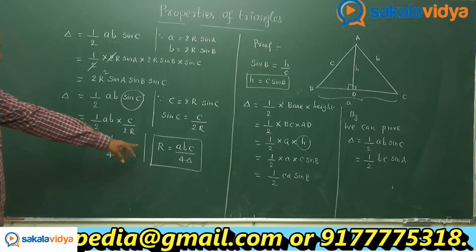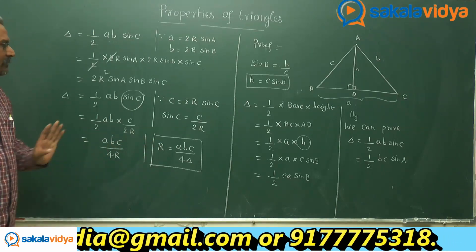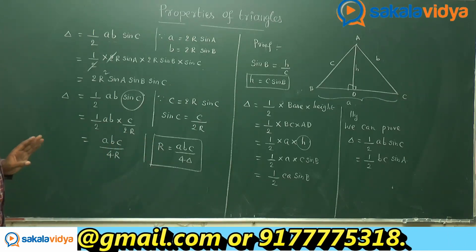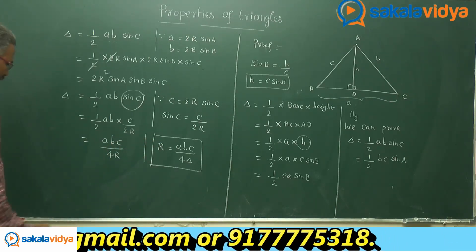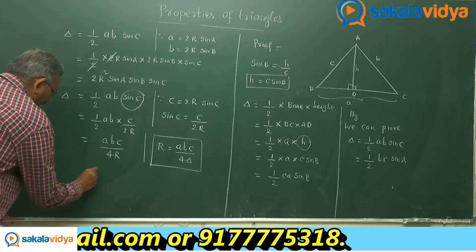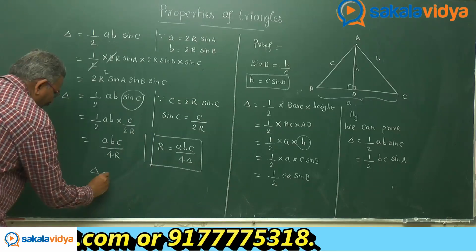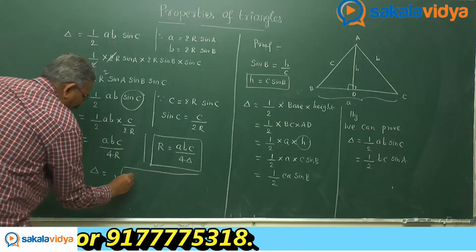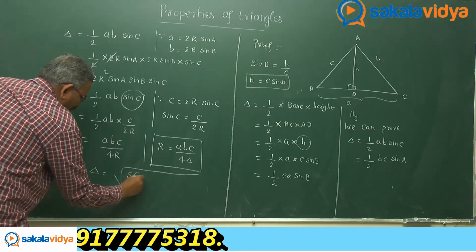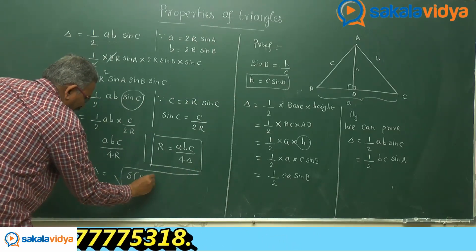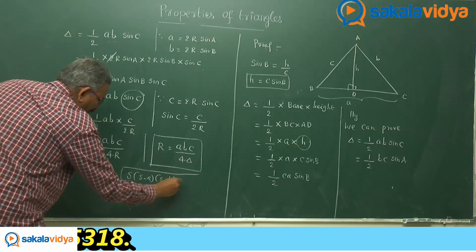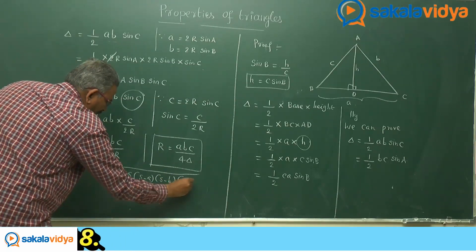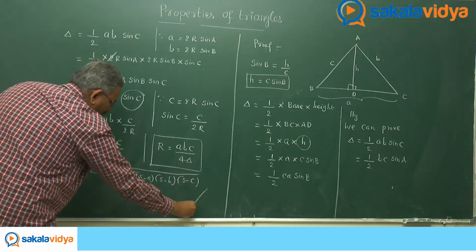One more formula we have for delta is Heron's formula: delta = √(s(s−a)(s−b)(s−c)), where s is the semi-perimeter.